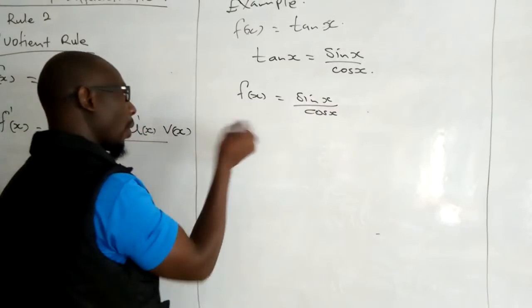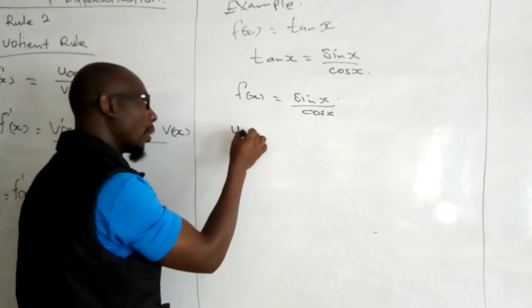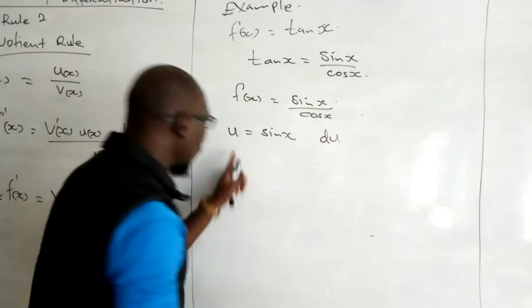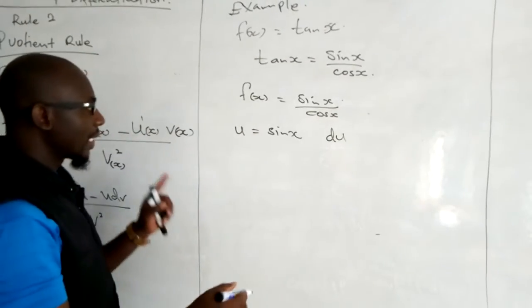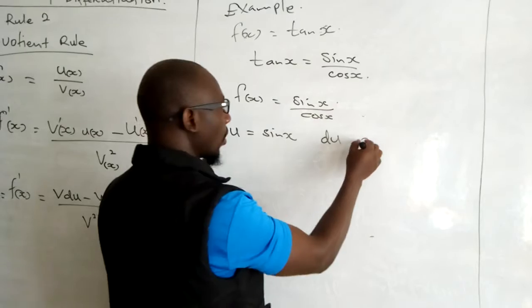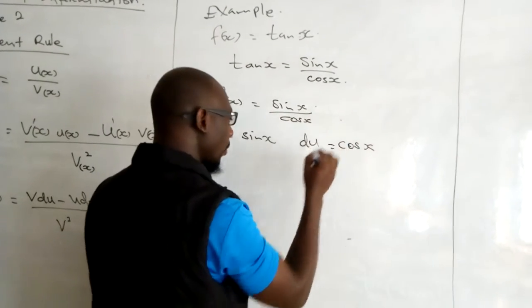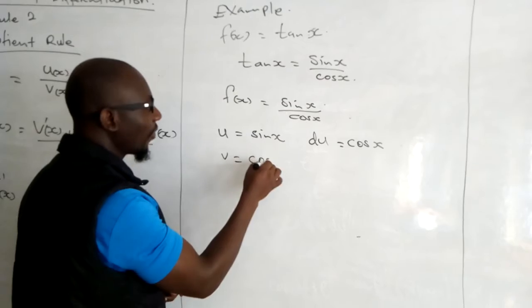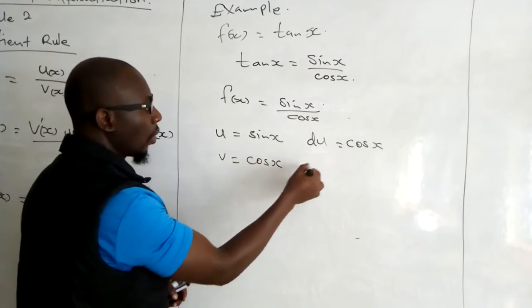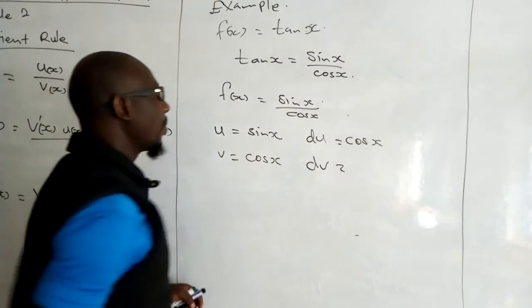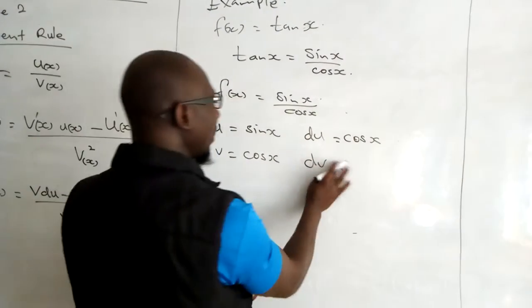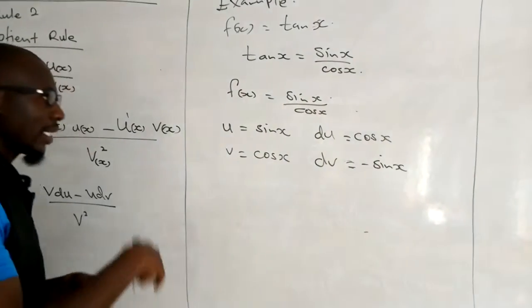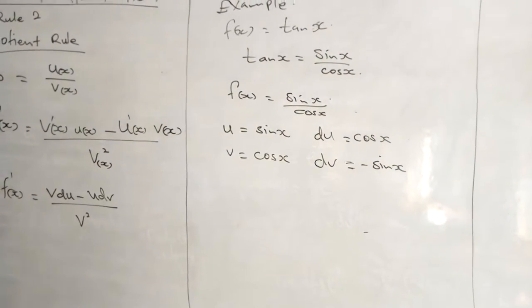We let the numerator u be equal to sin x. What is du? The derivative of u shall be cosine of x. We also let v be equal to cosine of x. What is dv? dv shall be equal to negative sine of x, because if you take the derivative of cosine, you get negative sine.